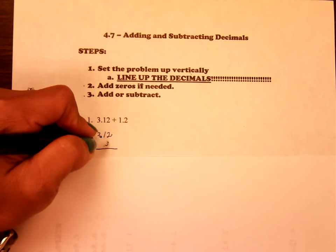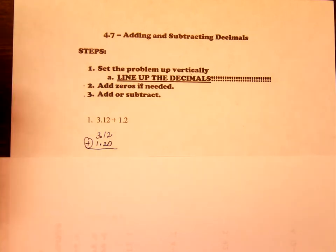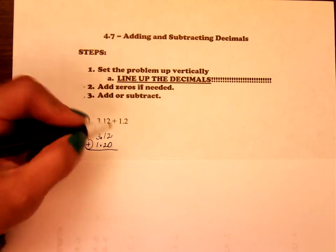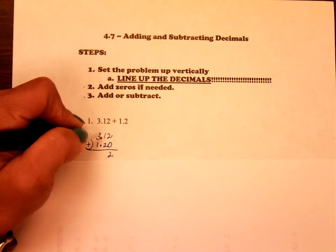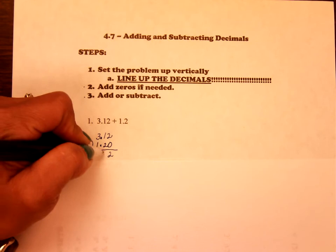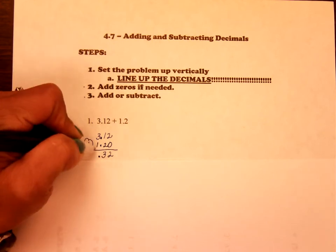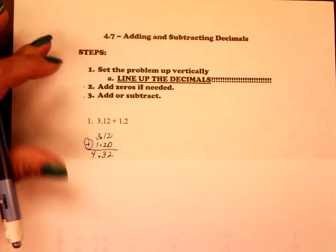It says add zeros if necessary, so there's no number underneath this 2, so I'm going to add a 0 there. That says to add, so you're just going to add 2 plus 0 is 2. 1 plus 2 is 3. Bring that decimal straight down. And then 3 plus 1 is 4. So your answer is 4.32.